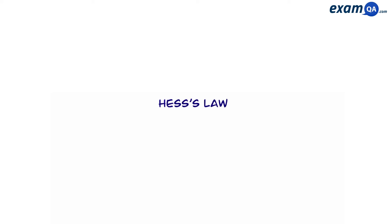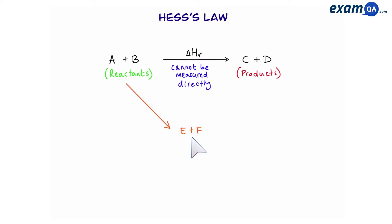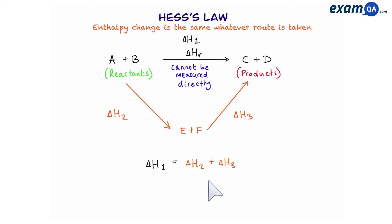In this video we're going to be talking about Hess's law. Let's say we have a reaction: A plus B turns into C and D, and we want to work out the enthalpy change for this reaction. However, the enthalpy change cannot be measured directly, so we're going to have to improvise — working out an alternative route, for example going to E plus F and then from there going to C plus D. Calling these reactions one, two, and three, reaction one equals two plus three. This is Hess's law: the enthalpy change is the same whatever route is taken.